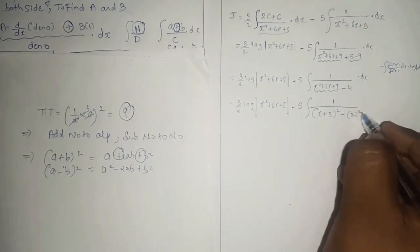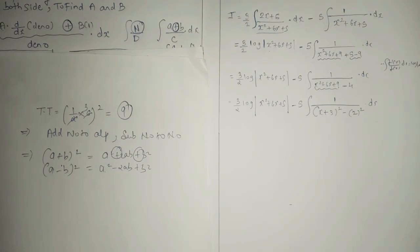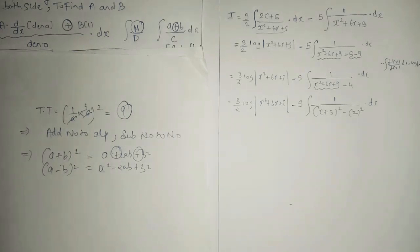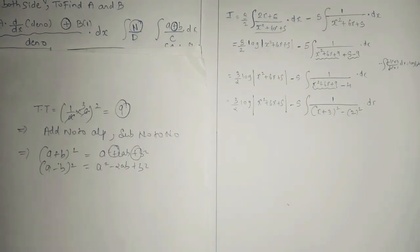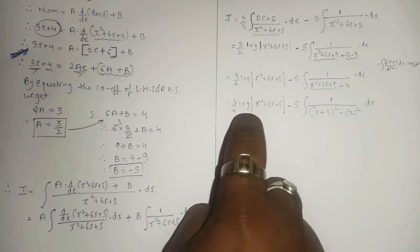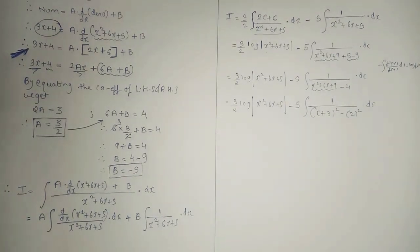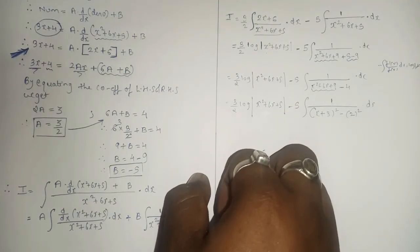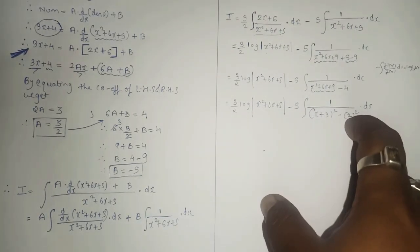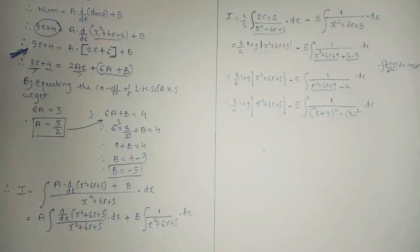We can write the denominator as (x plus 3) squared minus 2 squared. This looks like the second formula: integral of 1 upon x squared minus a squared dx equals 1 upon 2a times log|(x minus a) upon (x plus a)| plus c. Apply this formula. Keep writing the step as it is.